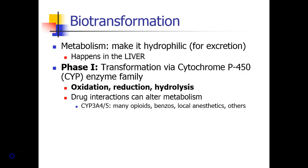Phase I chemical reactions that occur in the liver usually involve some sort of transformation by means of the cytochrome P450 superfamily of enzymes. Different reactions include oxidation, reduction, and hydrolysis, all with the goal of making the chemical more hydrophilic so it can be excreted in the urine.